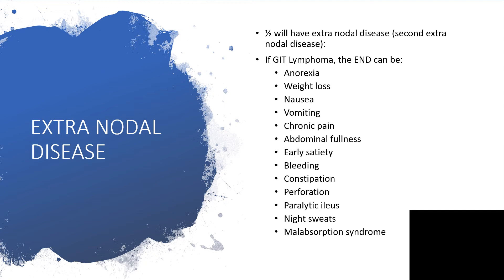GI lymphoma can also cause bleeding, leading to melena stool or frank hematochezia. Sometimes you may only detect iron deficiency anemia in an elderly person, giving a clue that there is occult bleeding somewhere. Constipation, intestinal perforation in unlucky ones leading to acute emergency, and paralytic ileus with stasis are also possible.